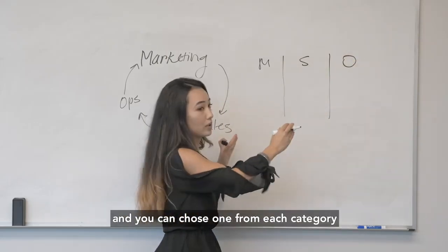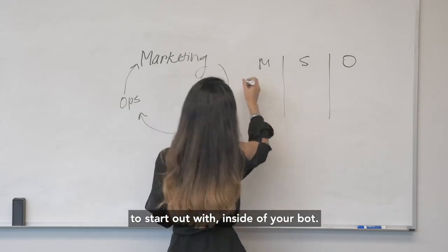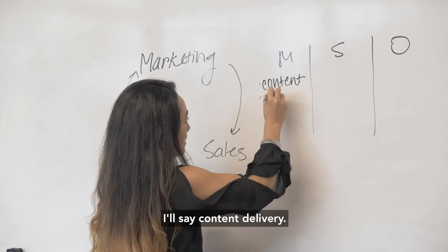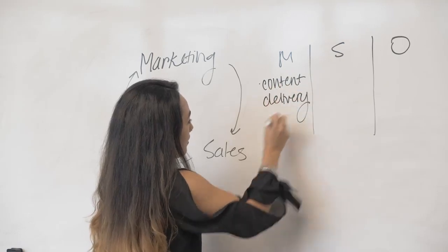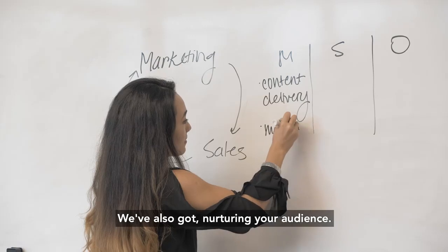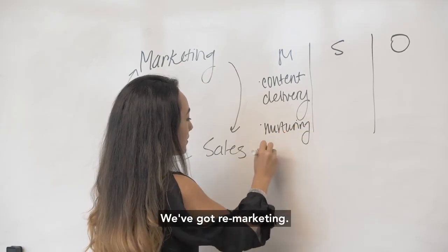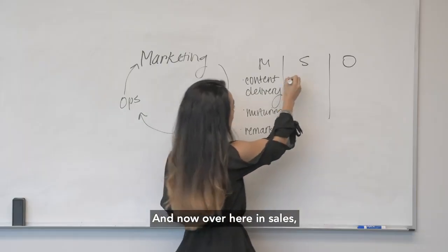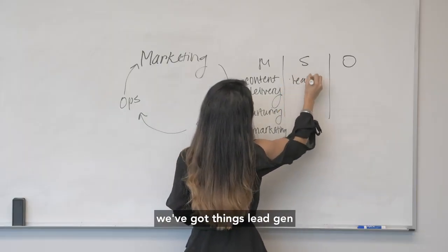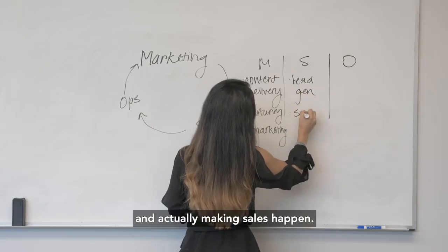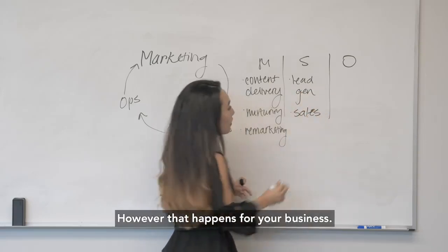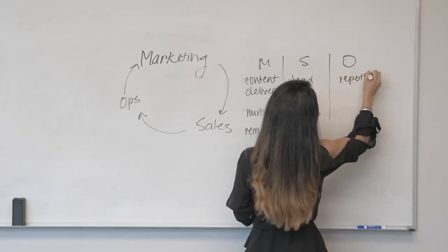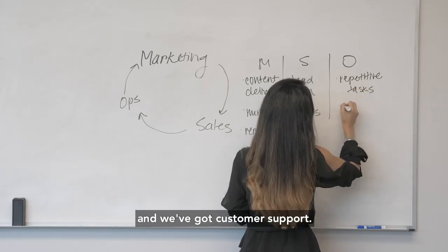You can choose one from each category to start out with inside your bot. For marketing, we've got things like content delivery, nurturing your audience, and remarketing. Over in sales, we've got lead generation and actually making sales happen, however that works for your business. For operations, we've got repetitive tasks and customer support.